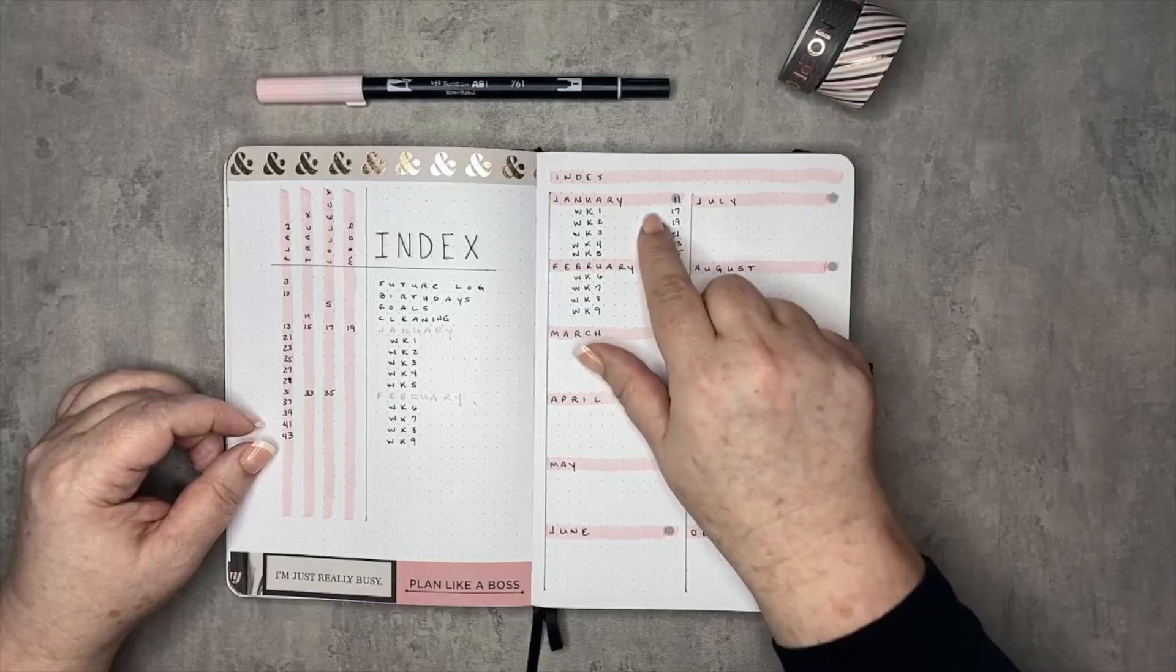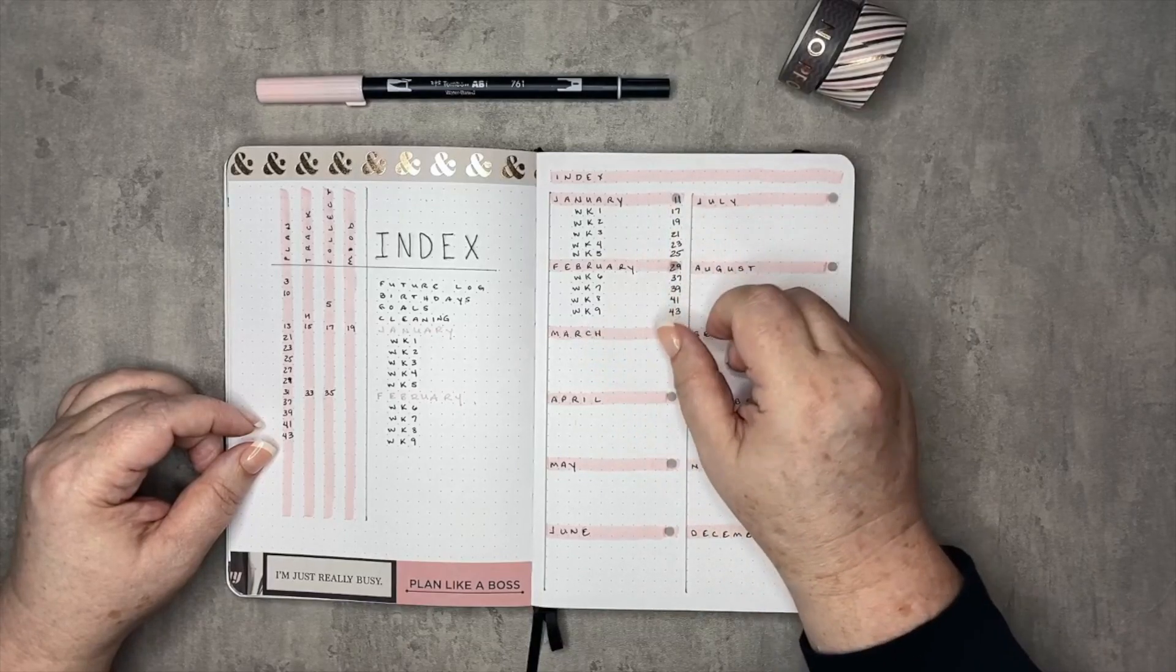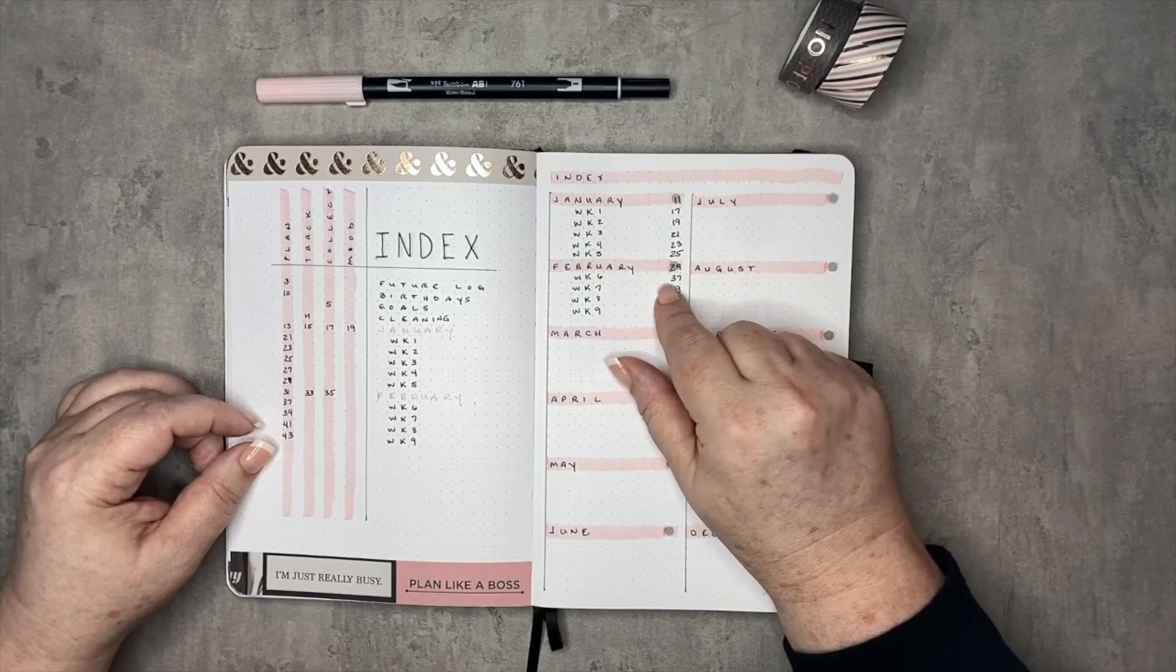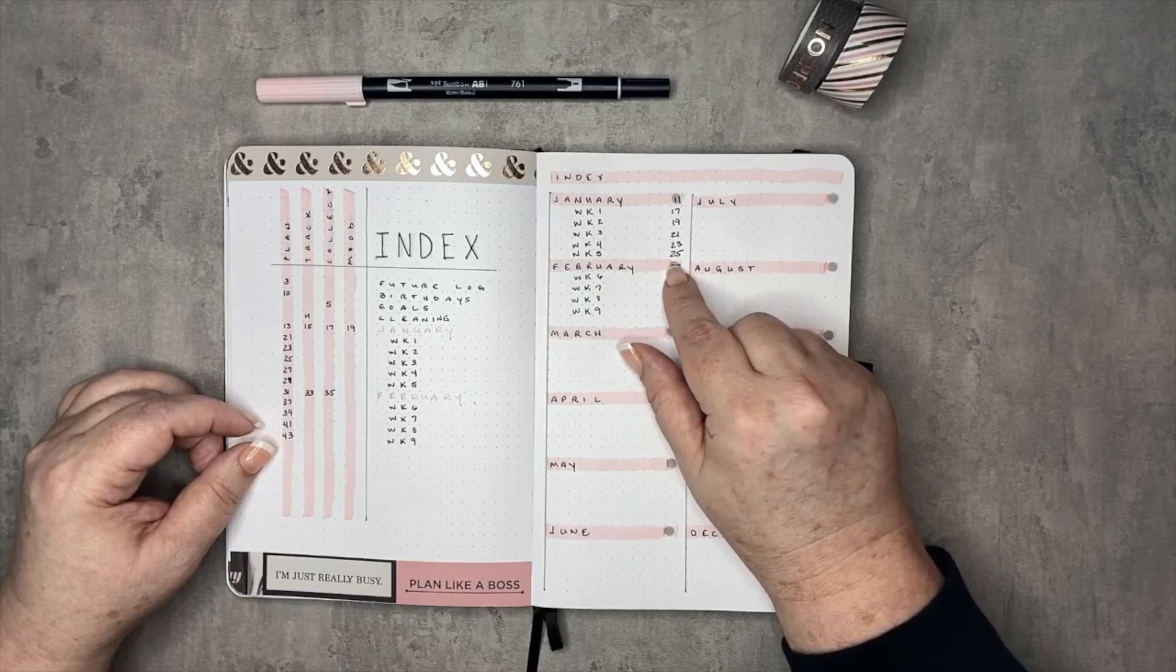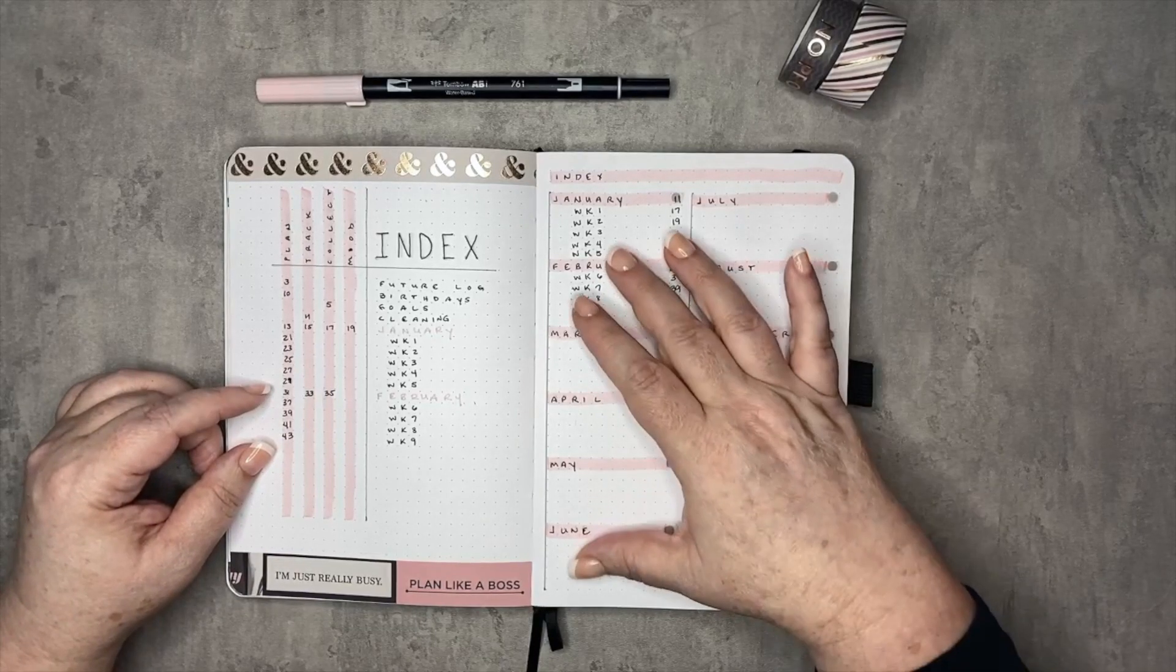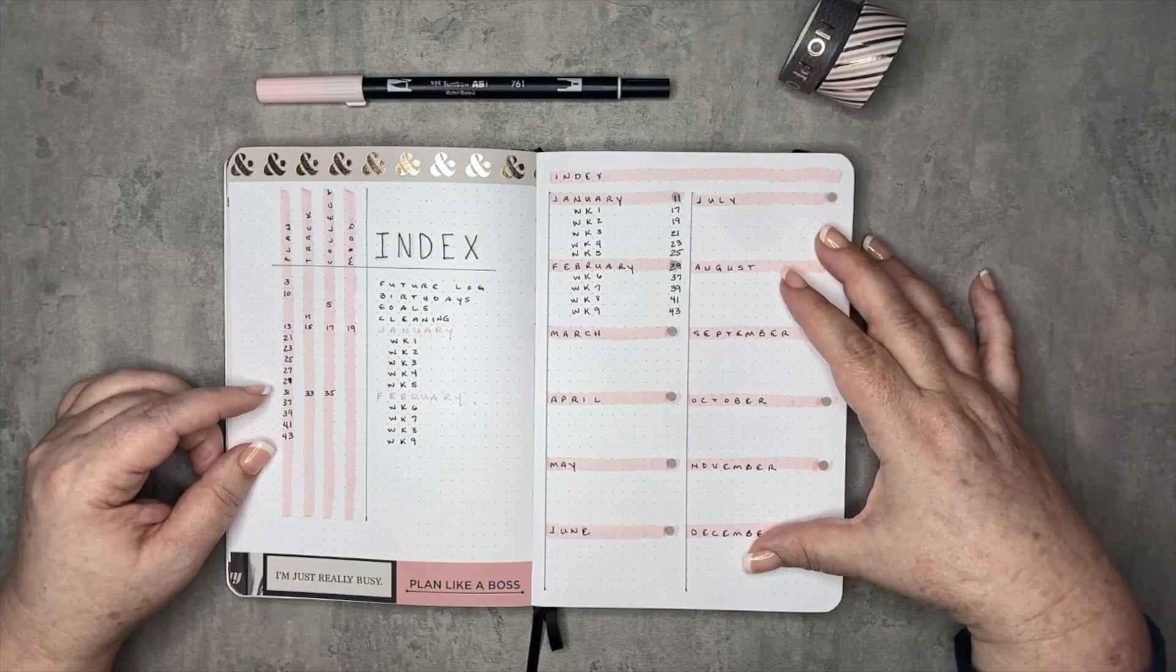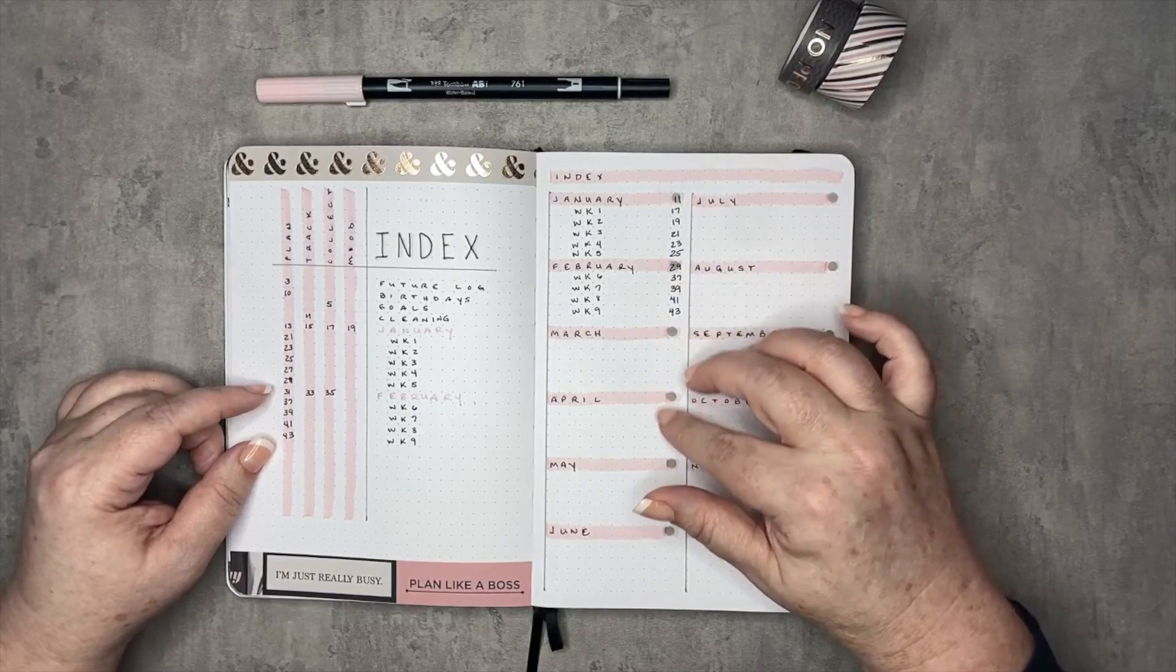And then you know that whatever collection you have in January falls right after page 11. And whatever collections you have in February fall right after page 29. And that's another way that you could do an index where you really just jump to where you need to jump.